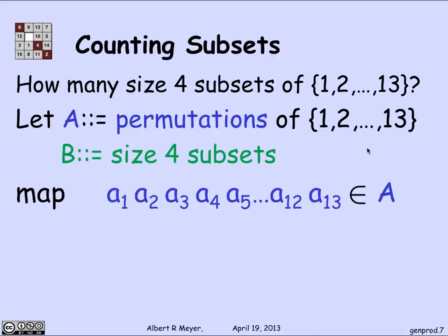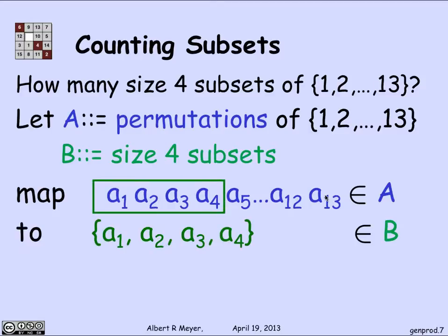And I want to find a mapping from A that I know how to count to B that I don't yet know how to count but in a way where I can figure out that it's K to 1 for a K that I can also count. How do I do that? Well let's take an arbitrary permutation of A, that is to say a sequence of the elements of A in some order, call them A1, A2 through A13. So these numbers A1 through A13 are these numbers 1 through 13 in some unknown order. And I'm going to map a permutation of A like this to its first 4 elements.